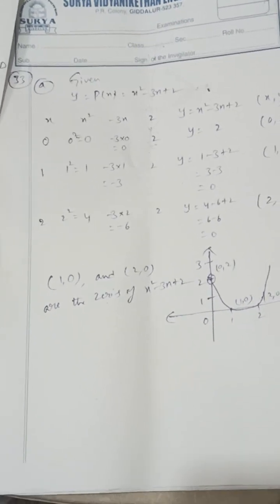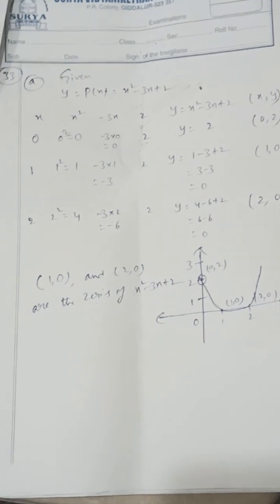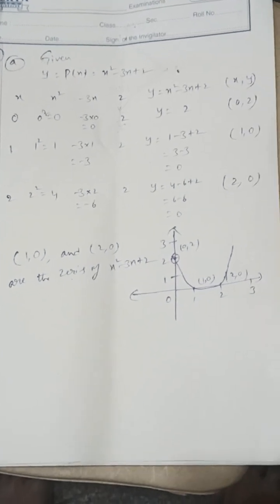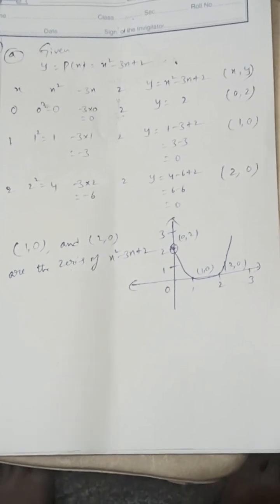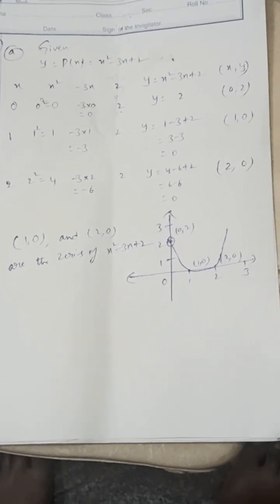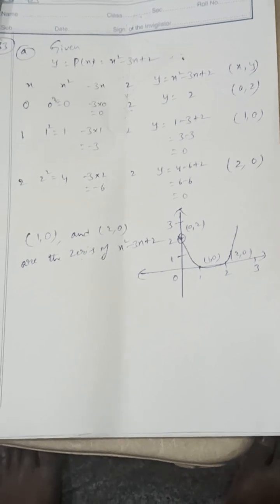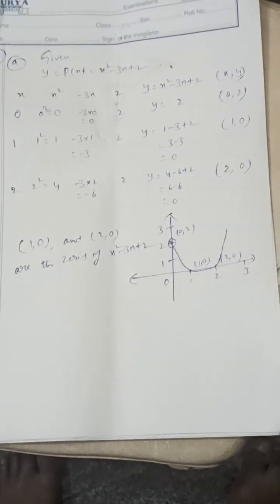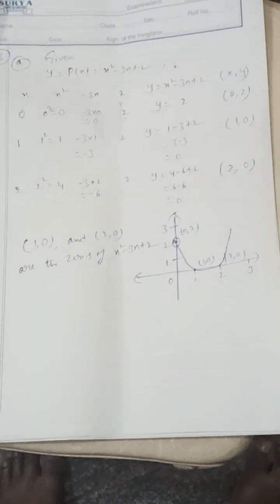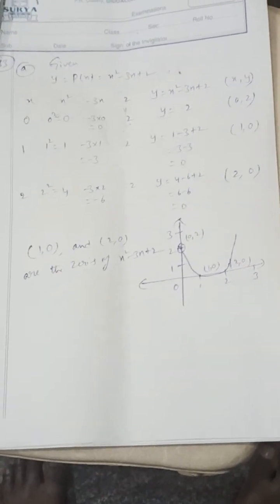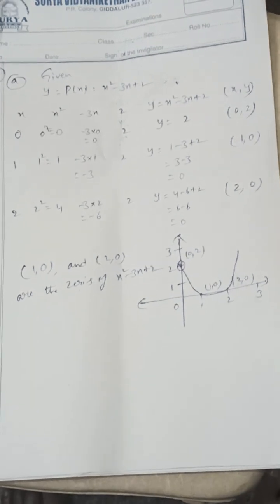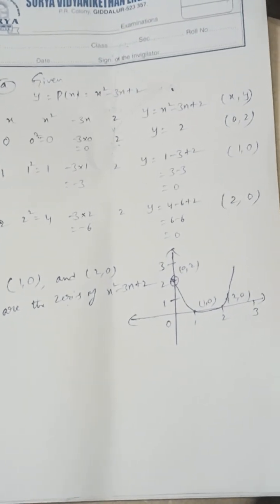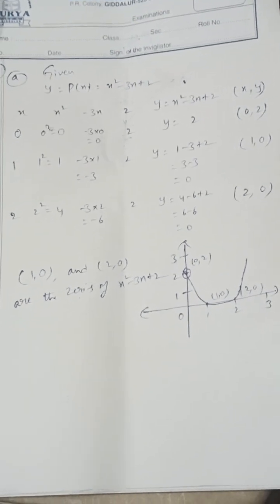Draw the graph for x² − 3x + 2. The key points are (0, 2), (1, 0), and (2, 0). These points intersect the graph between the x-axis and y-axis. Thank you for watching — please subscribe to our YouTube channel and share with your friends.